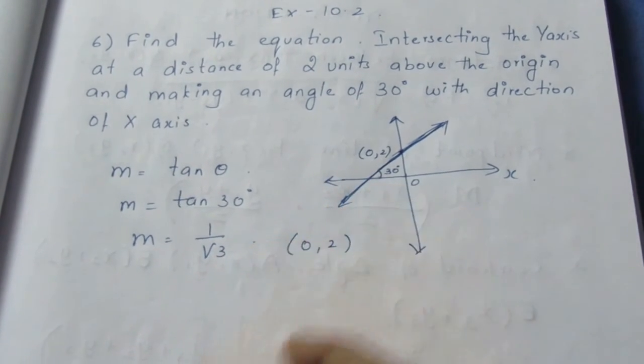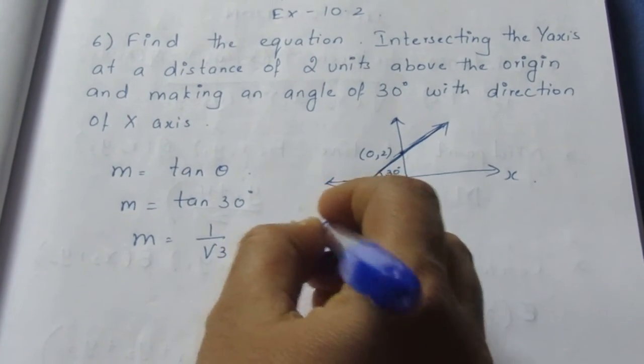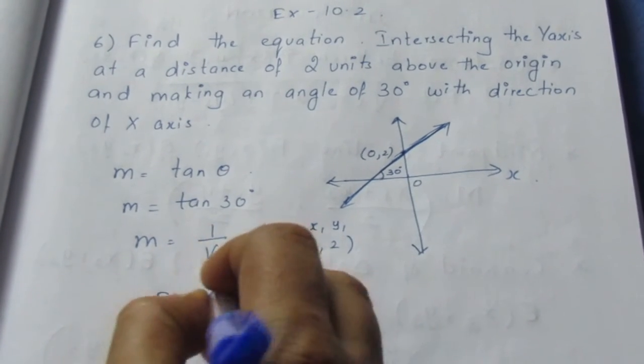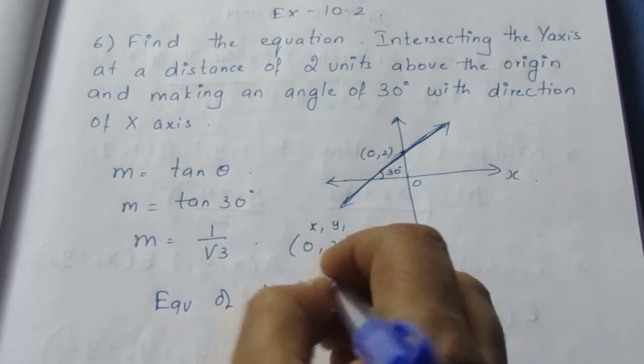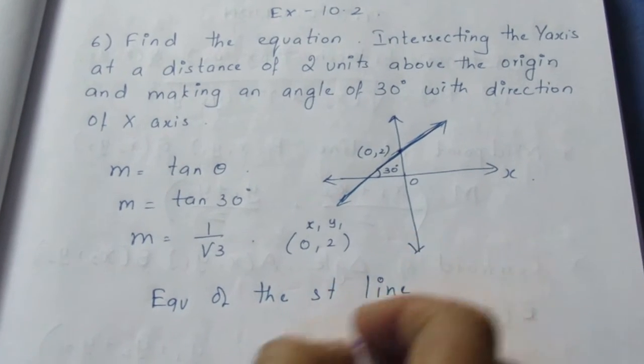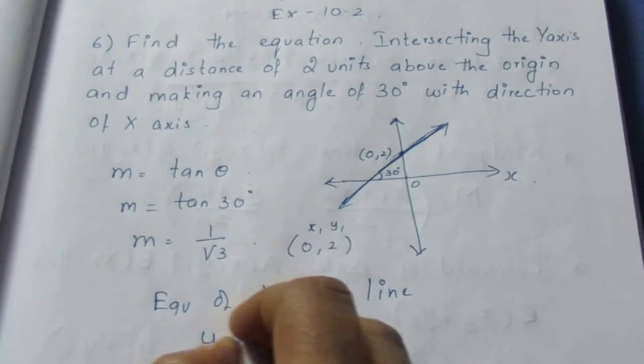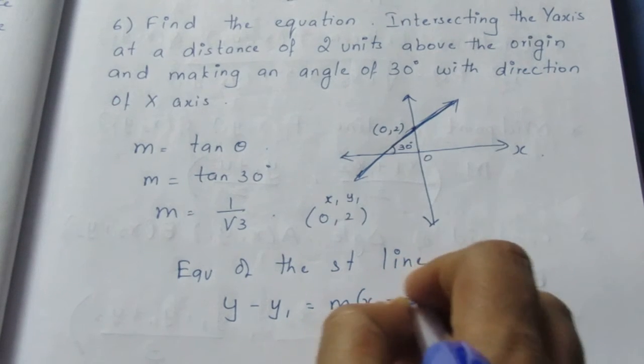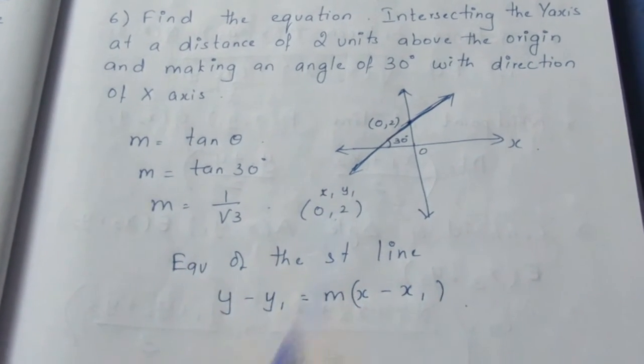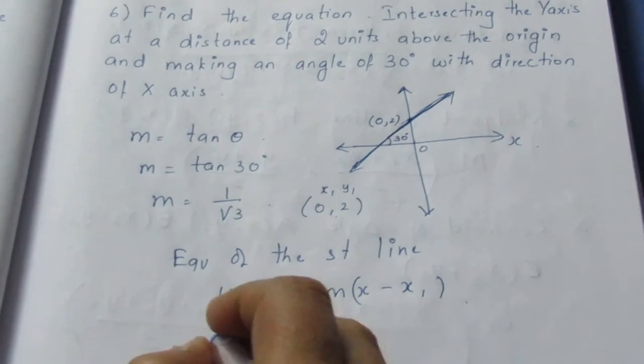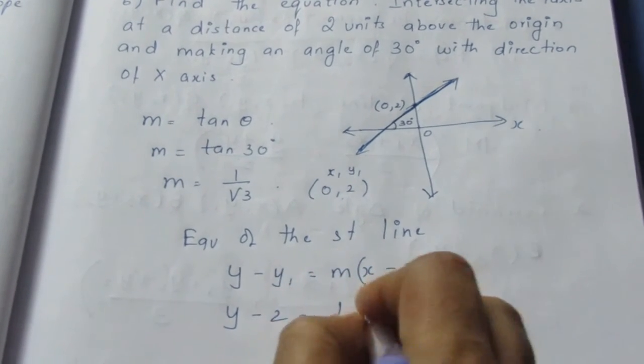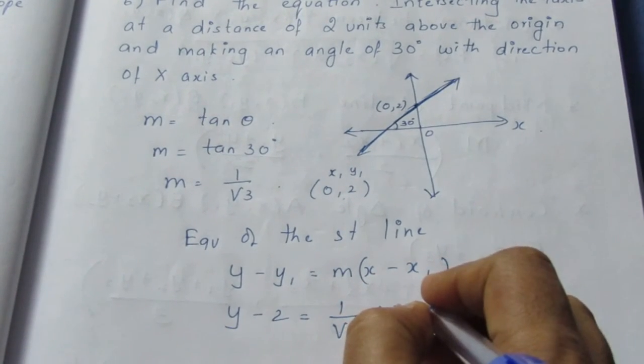We know a point (0, 2) on it. So directly, we can find the equation of the straight line by applying the formula y - y₁ = m(x - x₁) because we know the slope and a point. Now, y - 2 = (1/√3)(x - 0).